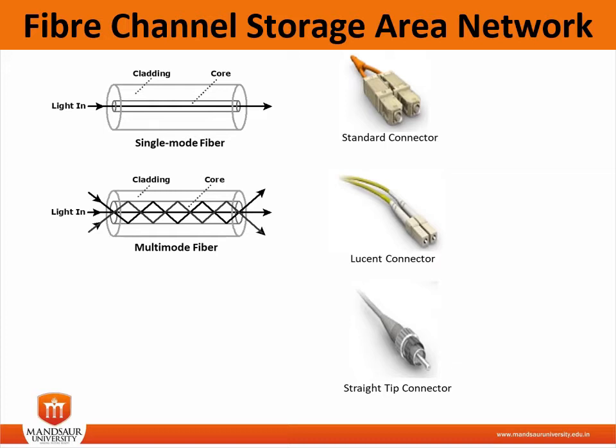Copper can be used for shorter distances or for back-end connectivity because it provides an acceptable signal-to-noise ratio for distances up to 30 meters. Optical fiber cables carry data in the form of light. There are two types of optical cables: one is multimode and the other is single mode. Multimode fiber cables carry multiple beams of light projected at different angles simultaneously onto the core of the cable.